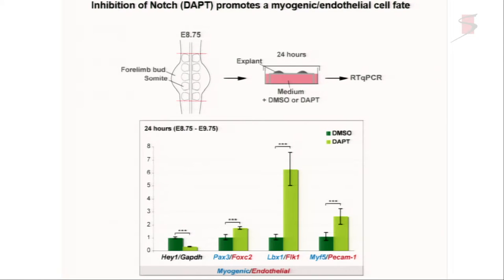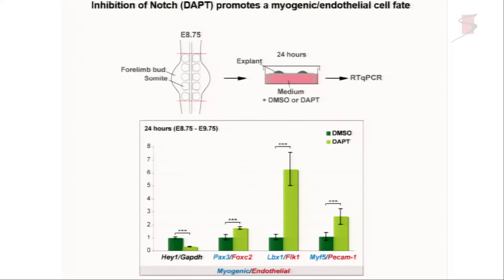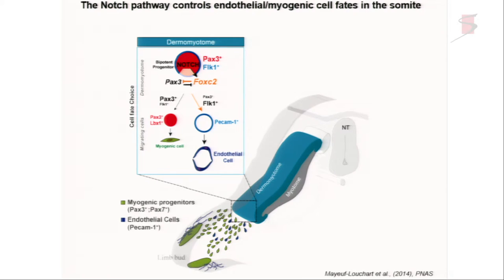Since NOTCH mutants are difficult to use because somitogenesis is compromised at the stages that interest us, we used explants and an inhibitor of the NOTCH signaling pathway. We put paraxial mesoderm and somites at limb level into culture where they develop. Inhibiting the NOTCH pathway causes the NOTCH readout Hes1 to go down; Pax3 goes up relative to FoxC2; LBX1, an early marker of myogenic fate in the somite, goes up relative to FLI1; and Myf5 goes up relative to PECAM. In conclusion, NOTCH signaling targeted to Pax3-positive multipotent cells shifts the balance in favour of FoxC2 and in favour of the endothelial cell fate.